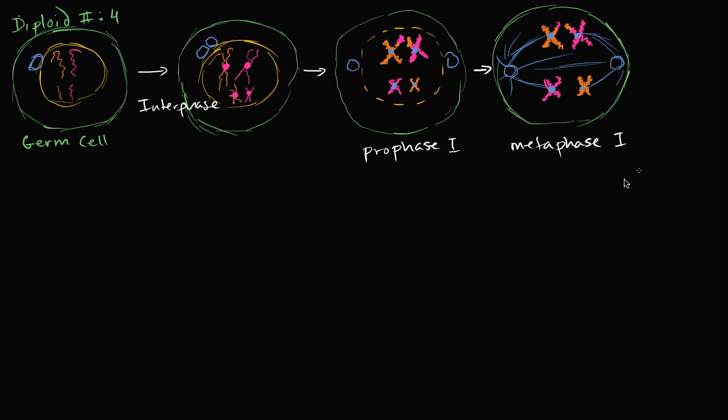Now you can probably guess what happens after that. We then move to anaphase one. And just like anaphase in mitosis, over here the chromosomes start getting pulled apart.